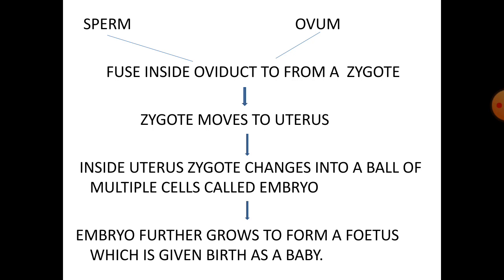The sperm and ovum fuse inside the oviduct to form a zygote. The zygote then moves to the uterus, where it changes into a ball of multiple cells called an embryo. The embryo further grows to form a foetus, which is given birth as a baby.